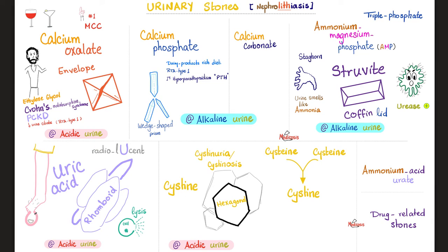Calcium oxalate kidney stones — acidic urine, most common type, shaped like an envelope. Risk factors include ethylene glycol intoxication, Crohn's disease or any malabsorption syndrome, polycystic kidney disease, and anything that decreases citrate in your urine, such as type 1 or distal renal tubular acidosis.